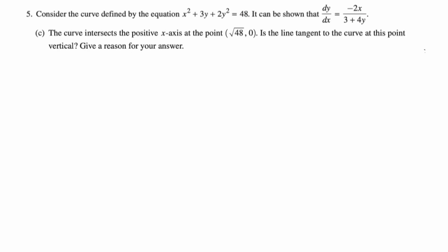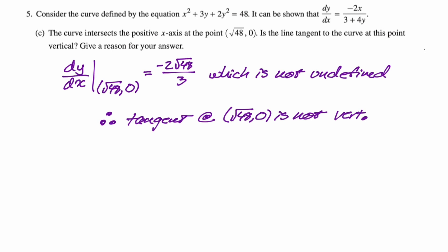Let's look at the next part. So the curve intersects the positive x-axis at the point root 48, 0. Is the line tangent to the curve at this point vertical? Give a reason for your answer. I think this is a weird question. Like, I think that this FRQ overall is kind of weird. I mean, I'm just going to find the slope at that point. So dy/dx at the point root 48, 0 is going to give us negative 2 root 48 over 3 plus 0, whatever. This is not undefined. So I'm just going to say, which is not undefined? Because if you have a vertical tangent line, the slope would have to be undefined. So since this is not undefined, the tangent at root 48, 0 is not vertical. And I think that that answers the question.